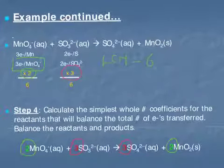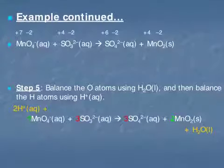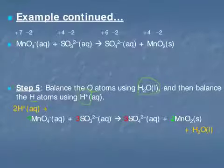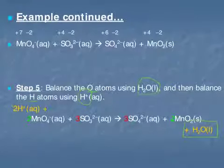Now that we have our redox atoms balanced, we can balance using oxygen. Just like when we balance in acidic conditions, we balance oxygens by adding water, and then balance hydrogens by adding H⁺. We will add 1 water to the product side and 2 H⁺ to the reactant side.